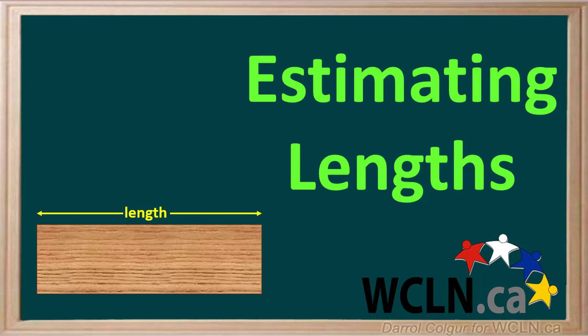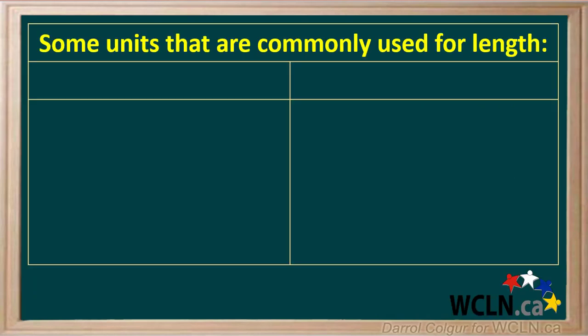Length is generally the distance from one end of an object to the opposite end. There are several units we commonly use to express length in. First, we'll consider units in the metric system, the official system used in Canada and almost every other country in the world.